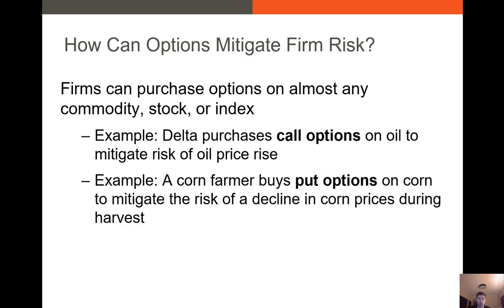Another example of using options to mitigate risk: let's say you have a corn farm. They produce corn, sell it at harvest time, but they're concerned that at harvest time the price of corn will fall. One thing they could do is buy put options with a set strike price. Even if the underlying value of that corn falls below the strike price, they still have the put options they can exercise and sell that corn for the higher strike price rather than the lower market price of corn. This is how they hedge against downside risk.